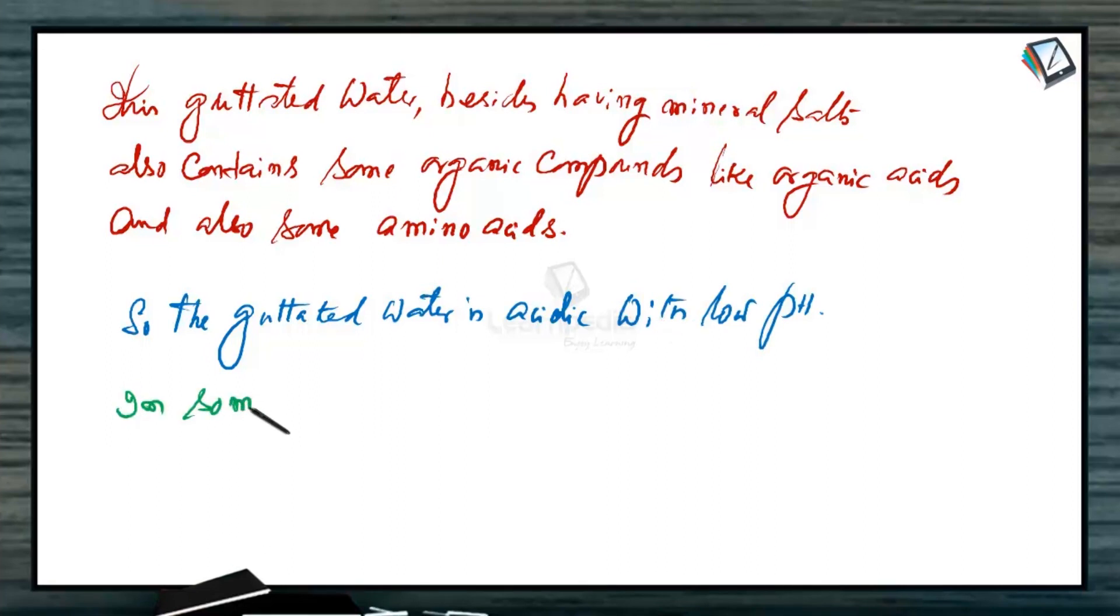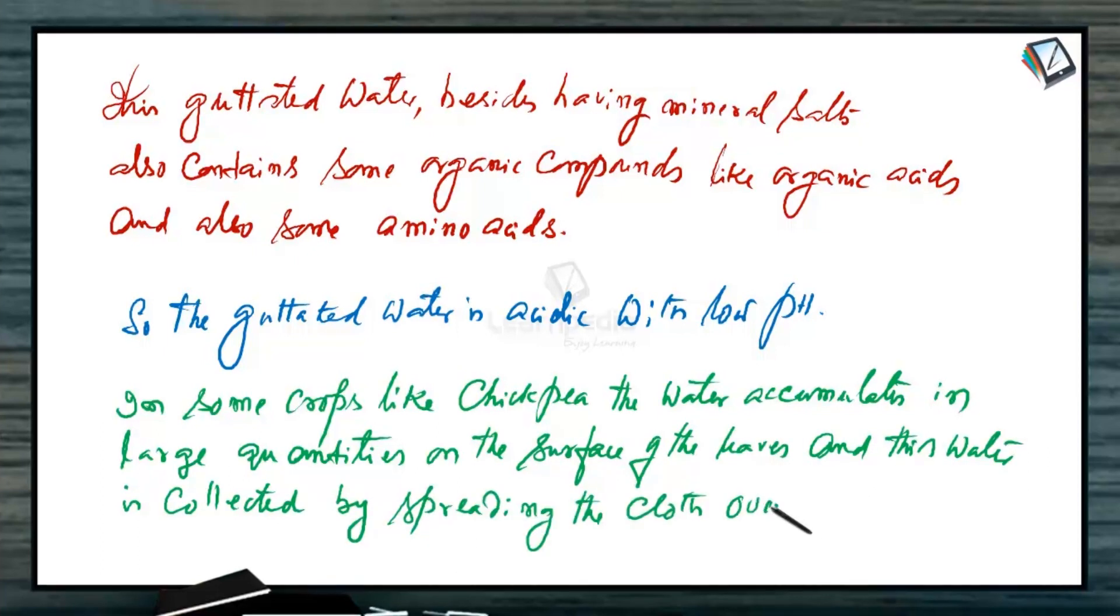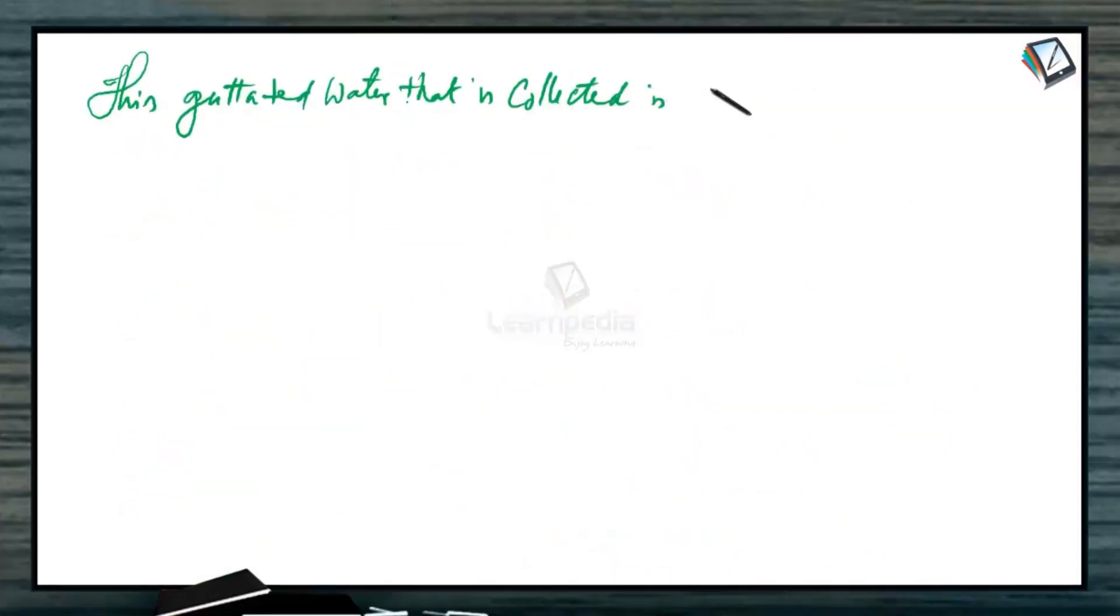In some crops like chickpea, the water accumulates in large quantities on the surface of the leaves. And this water is collected by spreading the cloth over the crop and the wetted cloth is squeezed and collected in vessels.